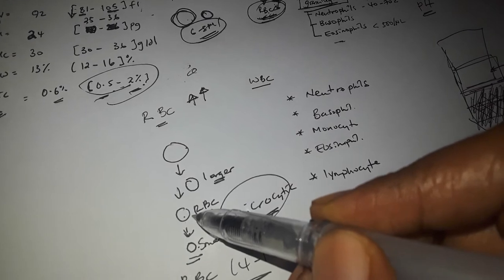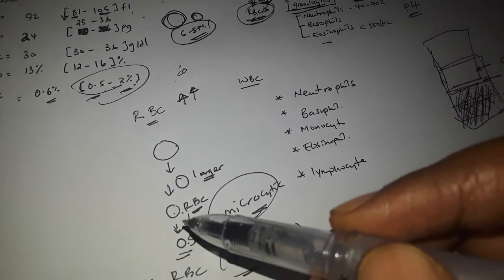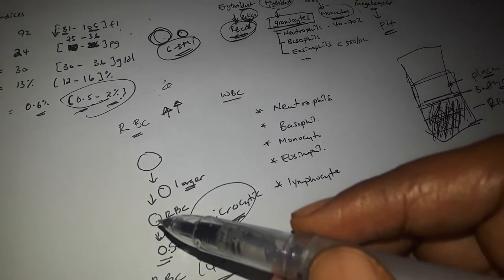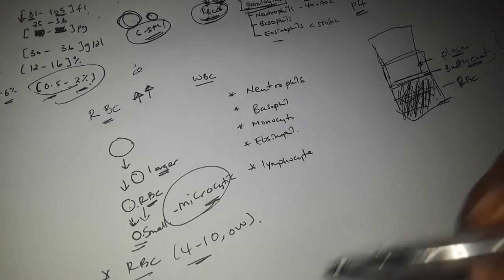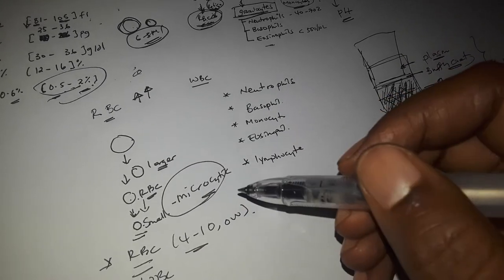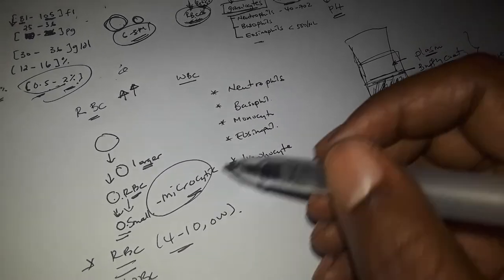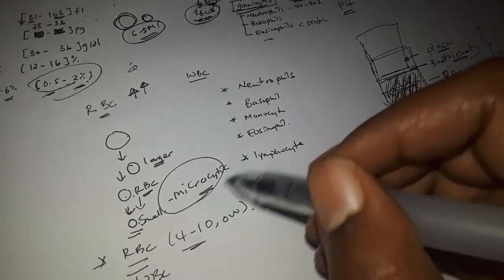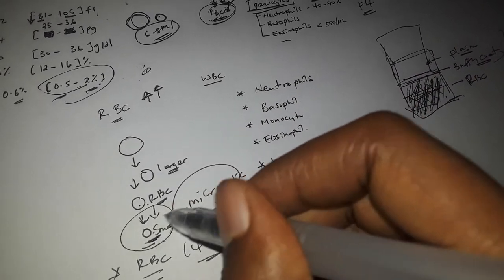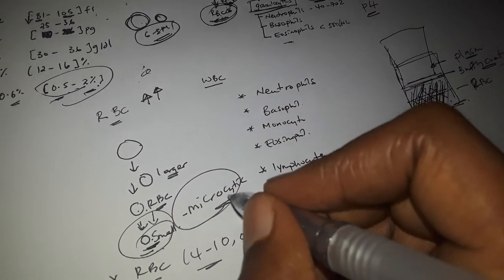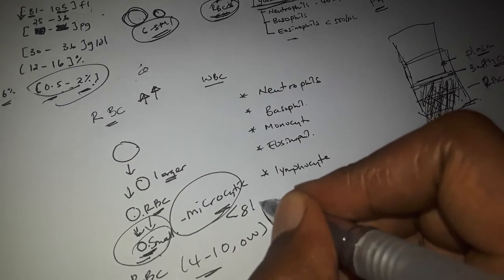When iron is deficient, the RBC responds by dividing one more time. Because of this extra division, the red cell size becomes smaller, and so the MCV will be smaller.